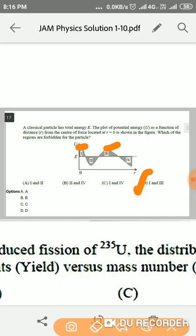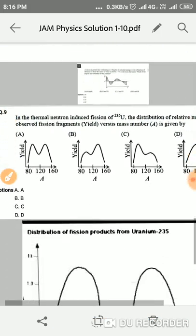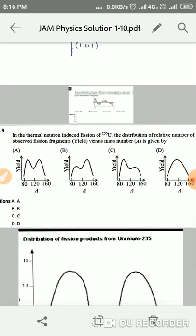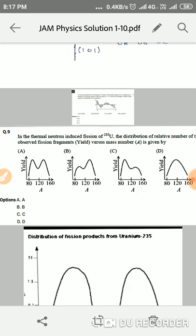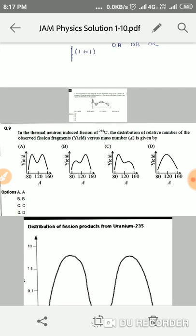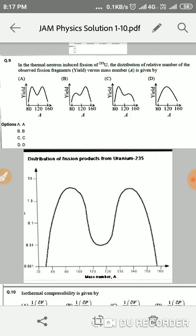Moving to the next question, we have been given the thermal neutron-induced fission of uranium-235, the distribution of relative number of observed fission fragments versus mass number. When fission of uranium-235 takes place, the mass yield versus mass number follows this pattern. If we match it with our given example, then option A is the right answer. If you want to read more about this, you can Google it. I have also downloaded the pic from Google itself.